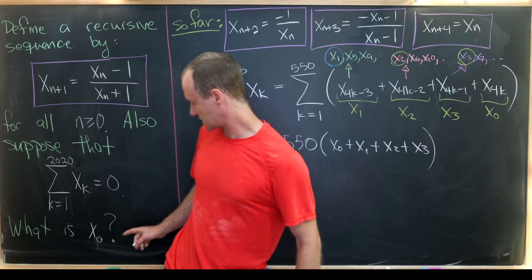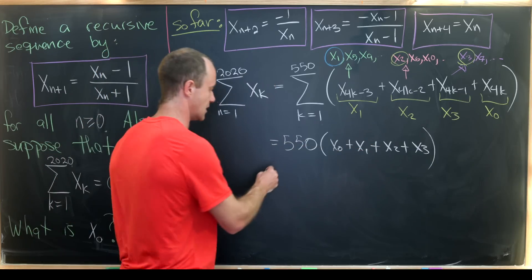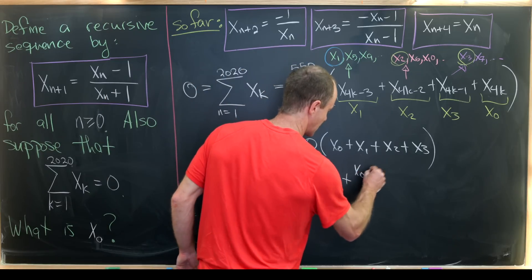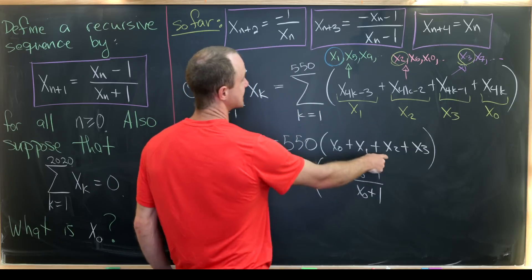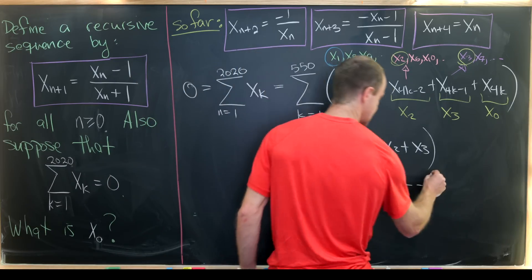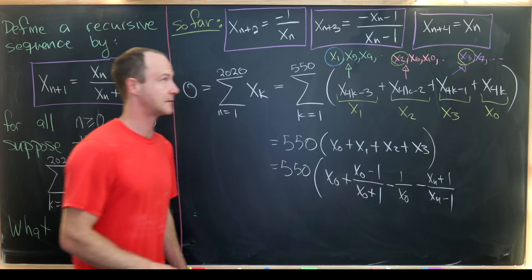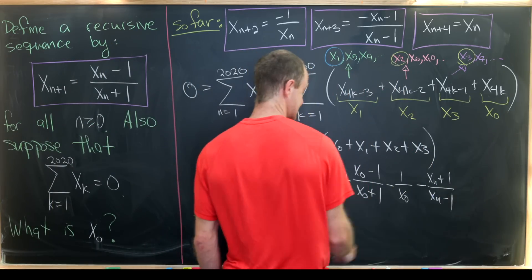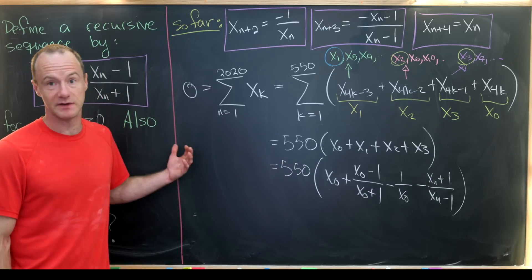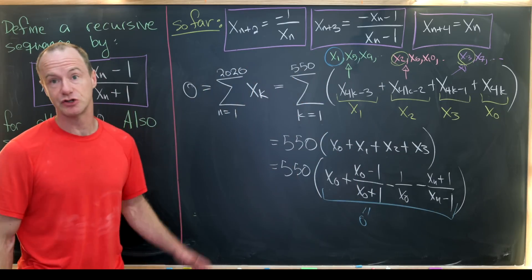We can write x_1, x_2, x_3 in terms of x_0. We have x_1 equals x_0 minus 1 over x_0 plus 1. We have x_2 equals minus 1 over x_0 from our two-step rule. And x_3 equals minus x_0 plus 1 over x_0 minus 1. Since 550 times the sum equals 0, the inner sum itself must equal 0, leaving us this equation to solve.